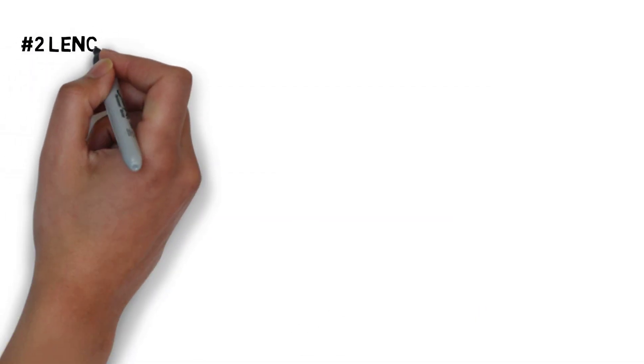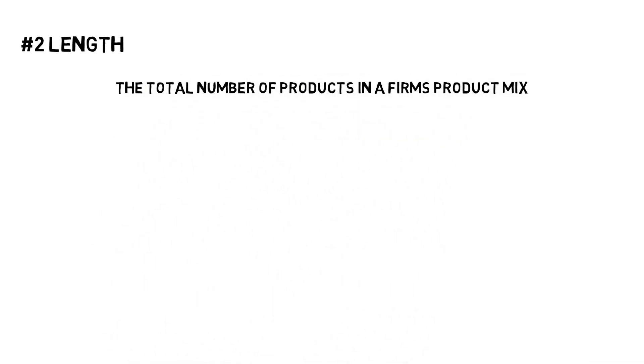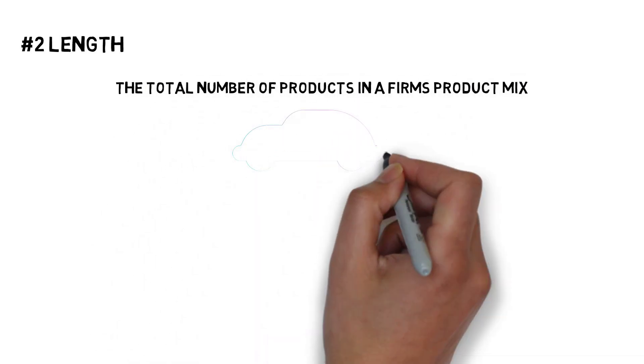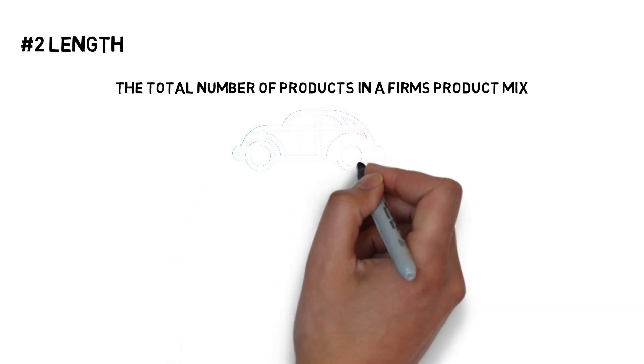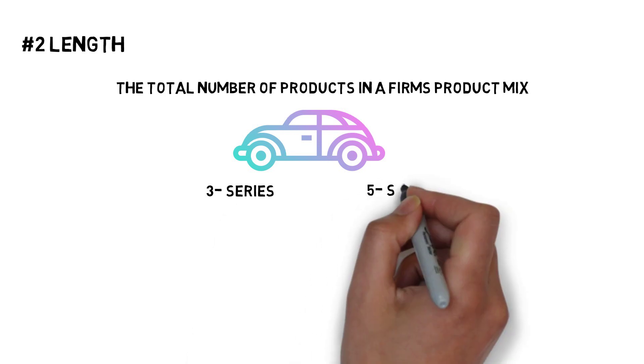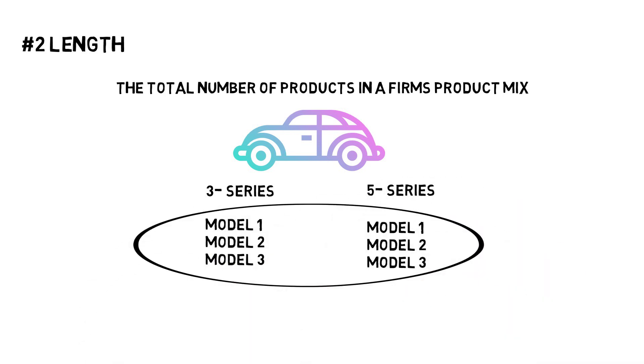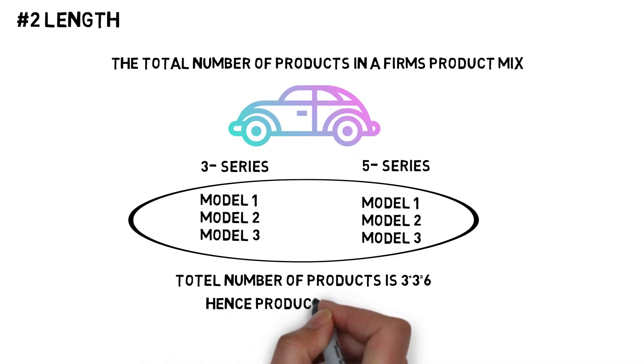In product mix, second one is length. Length refers to the total number of products in a firm's product mix. For example, consider a car company with two car product lines, 3 series and 5 series. Within each product line series, there are three types of cars. In this example, the product length of this company would be 6.